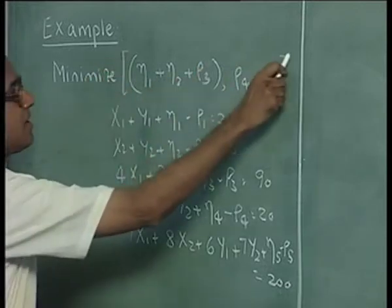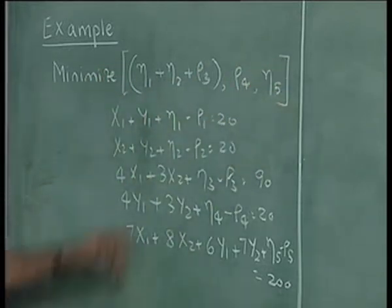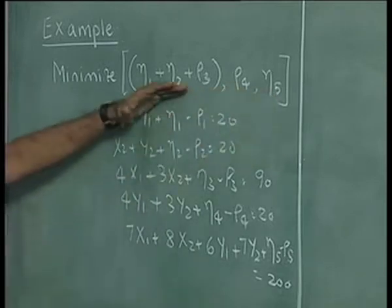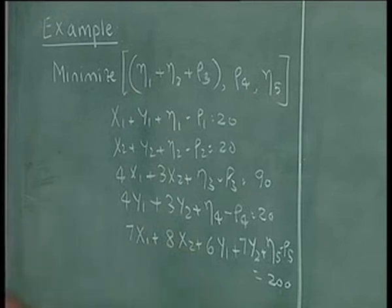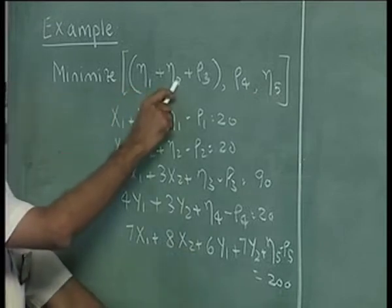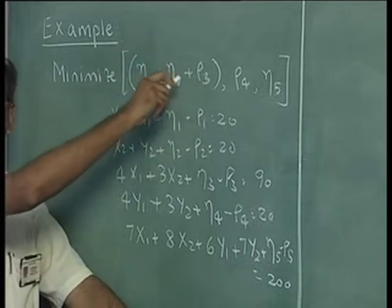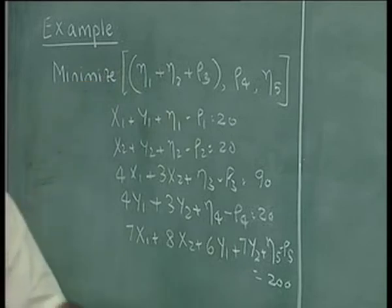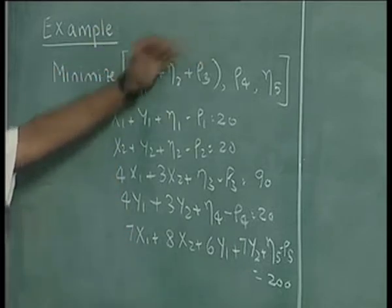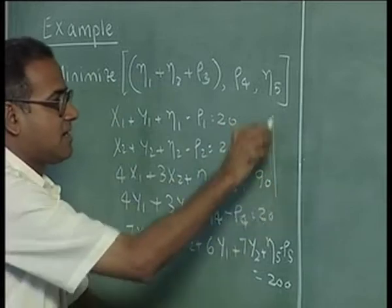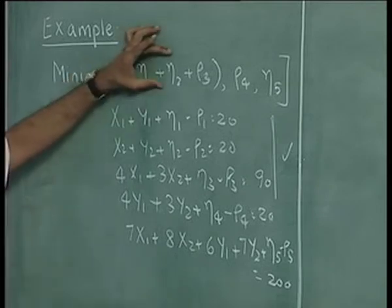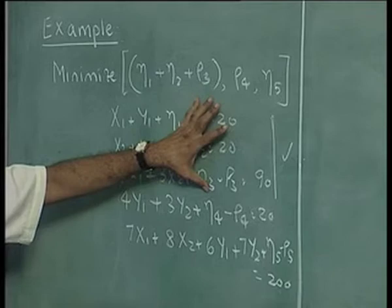The objectives are minimize eta1 plus eta2 plus rho3, and then rho4 and eta5 subject to the set of constraints. Because eta1, eta2 and rho3 are part of the first part of the objective function, the objective function has three parts. The first part contains these three which implies that these three constraints are the rigid constraints. We start the simplex algorithm by considering this objective function and only the rigid constraints to begin with.